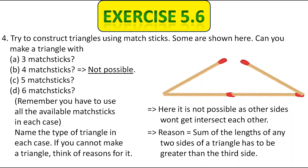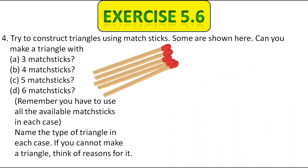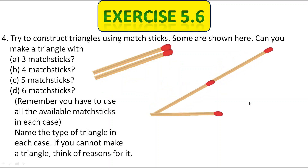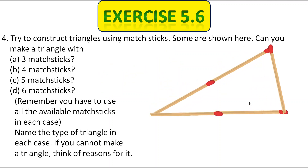Now let's use five matchsticks to make a triangle. We used two matchsticks here, two matchsticks here, and one matchstick here. We got a triangle with five matchsticks. Which type of triangle did it become? It became an isosceles triangle with two sides equal.